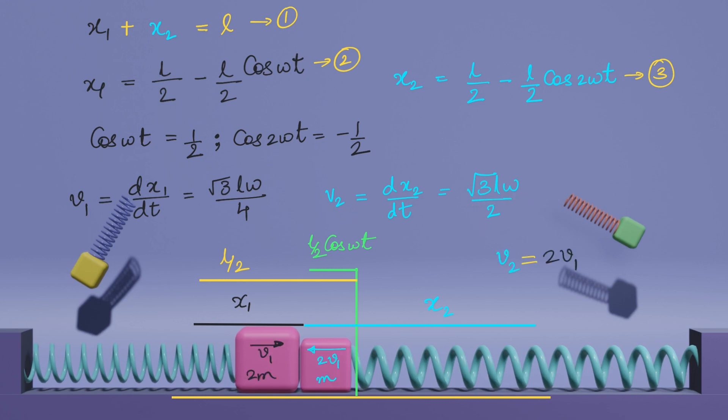We come to a very important conclusion here. v2 equals 2 v1, which means if the speed of this block 2m is v1 and the speed of m during collision is 2 v1.